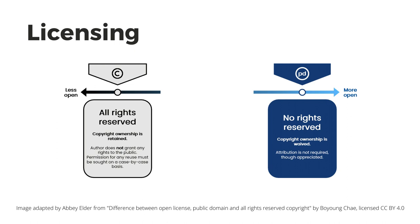On the other end of the spectrum, we have works in the public domain. You can build upon or create new additions to the work, but you can't lie and say you wrote the original. You don't need to ask for permission and you have a lot of leeway in how you can adapt the original work. This is how things like Pride, Prejudice, and Zombies get made, for example.